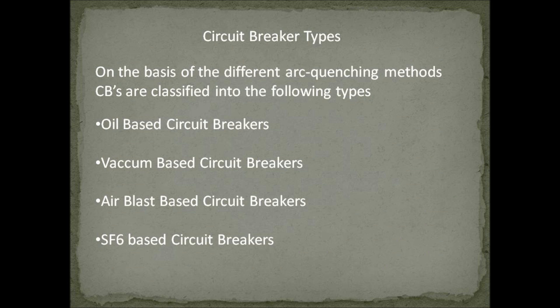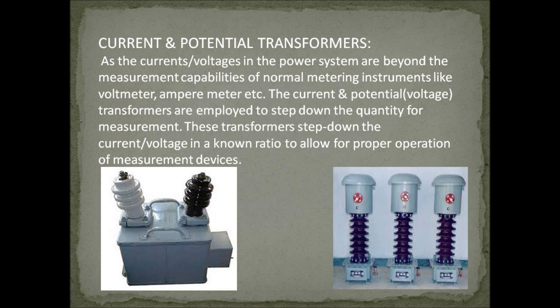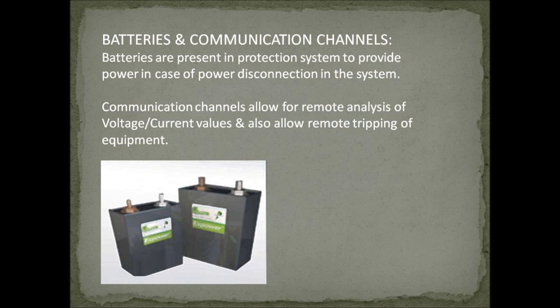Some common substation circuit breakers are dead tank and live tank circuit breakers. A dead tank circuit breaker has its base grounded, while a live tank circuit breaker is suspended in air and isolated from the ground. As current and voltages in the power system exceed the measurement capabilities of standard instruments like voltmeters and ammeters, current and potential transformers are employed to step down the quantity for measurement in a known ratio. Batteries provide power in case of disconnection from the system, and communication channels allow for remote analysis of voltage and current values and remote tripping of equipment.